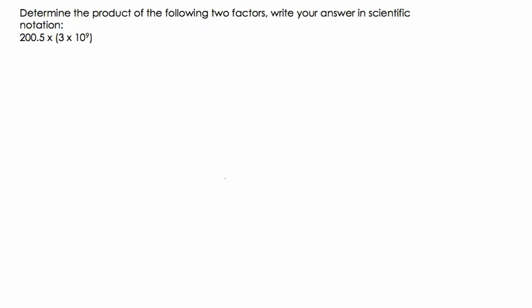Okay, so they want us to determine the product of the following two factors, and they want the answer in scientific notation. So let's break apart the language here. We've got the product. That means we're multiplying two factors. Those are the numbers we're multiplying.